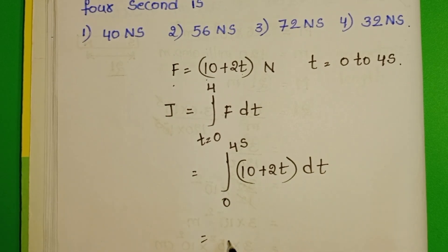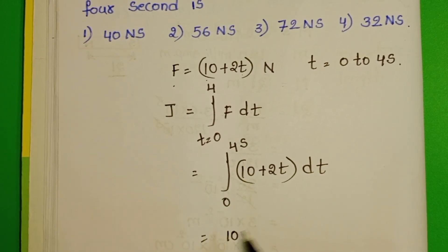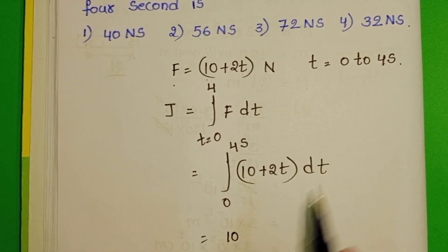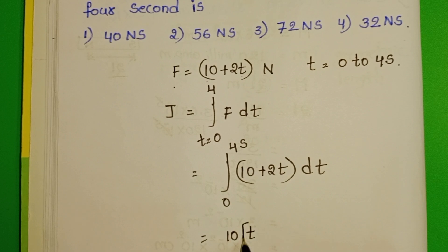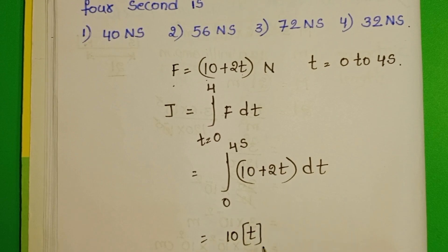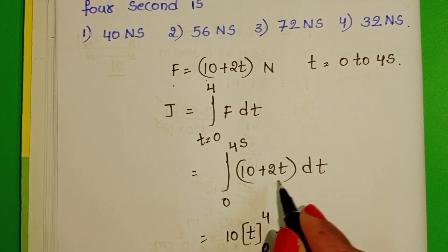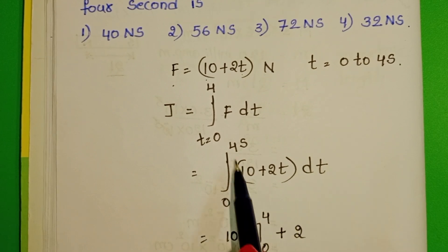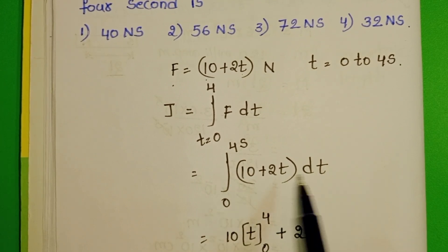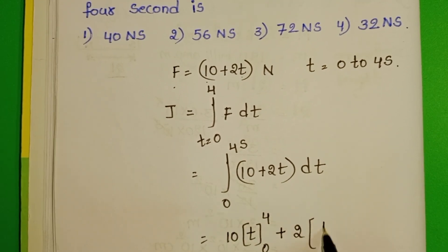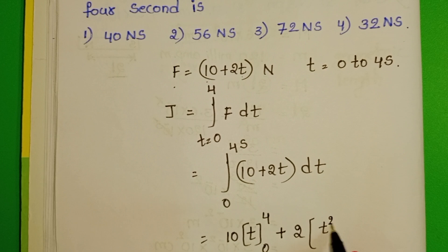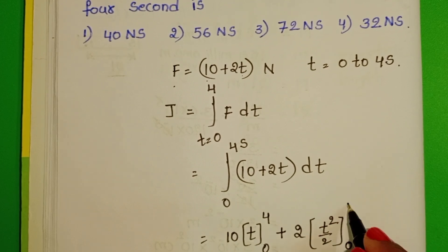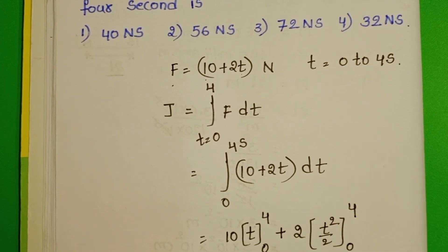10 is constant, so the integral of dt equals T, with limits from 0 to 4. Plus 2 is constant, so the integral of t dt equals T squared by 2, with limits from 0 to 4.